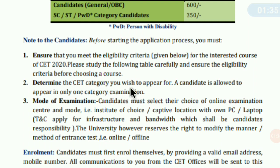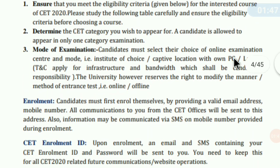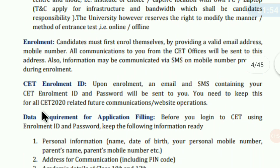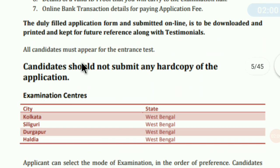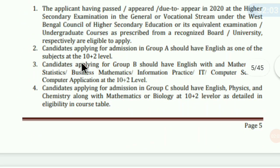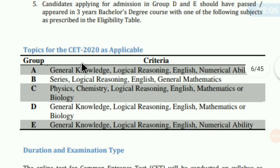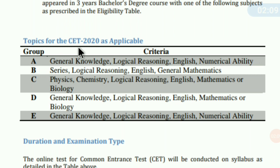Then determine the CET category you wish to appear for — a candidate is allowed to appear in only one category. There are categories A, B, C, D. Mode of examination: candidates must select their choice of online examination center. The syllabus topics for CET 2020 are divided into Group A, Group B, Group C, Group D, and Group E — five groups in total.